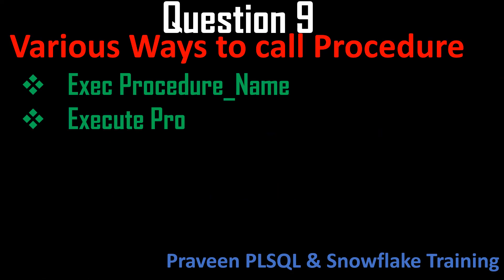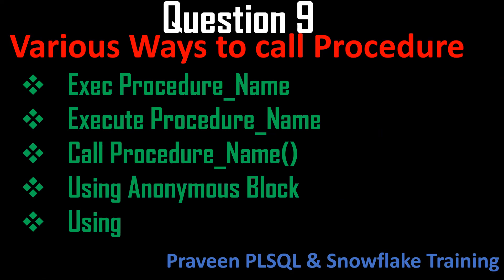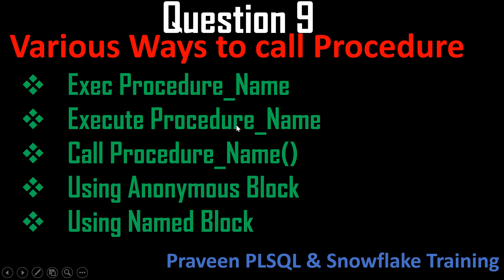Question number nine: what are the various ways to call a procedure? It can be called using EXEC procedure_name, EXECUTE procedure_name, CALL procedure_name, or using an anonymous block — the BEGIN...END block — or a named block. This is very important because as a database developer you should know how to call a procedure, function, or package.